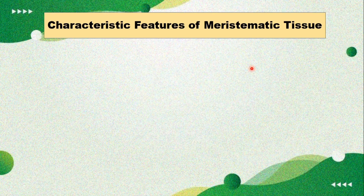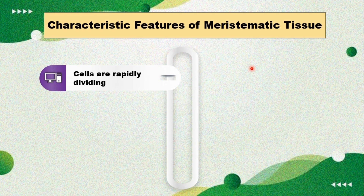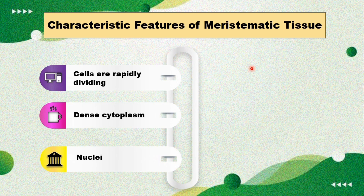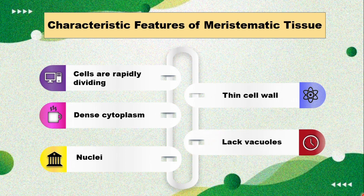What are the characteristic features of meristematic tissues? First, the cells are rapidly dividing — as seen in apical meristem, cell division is actively happening. Second, they have a dense cytoplasm. Third, there is presence of nuclei, as they are eukaryotes. Fourth, they have a thin cell wall.